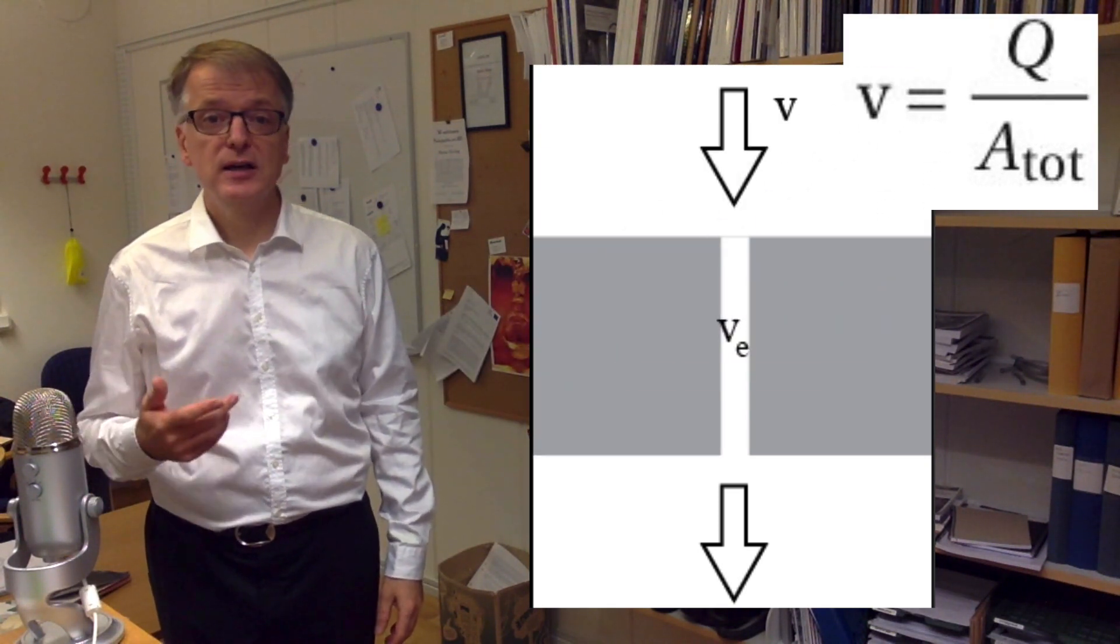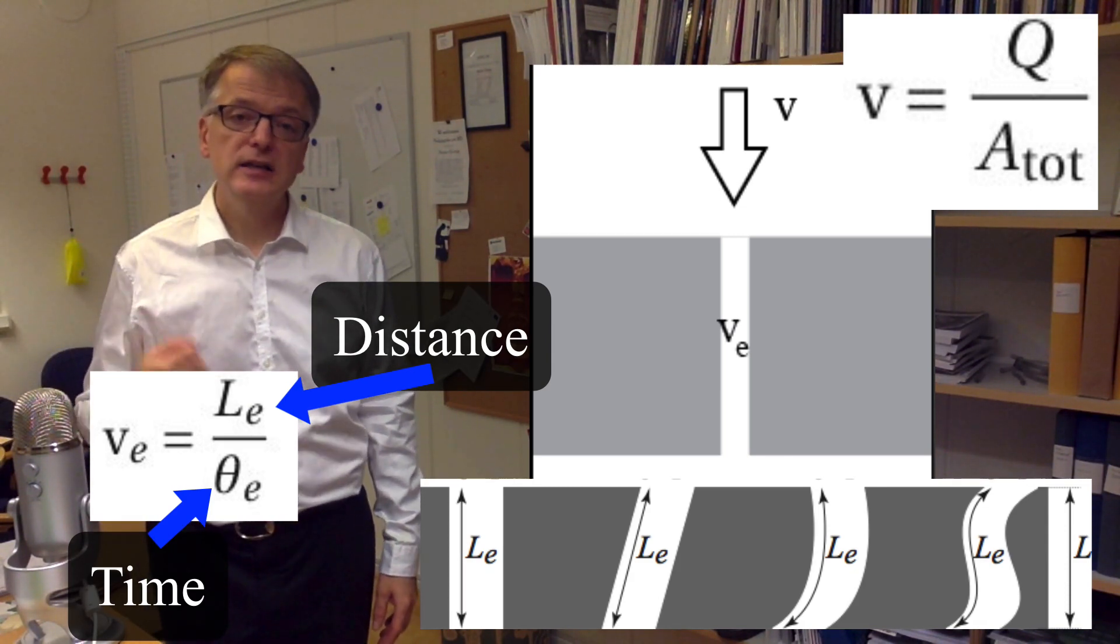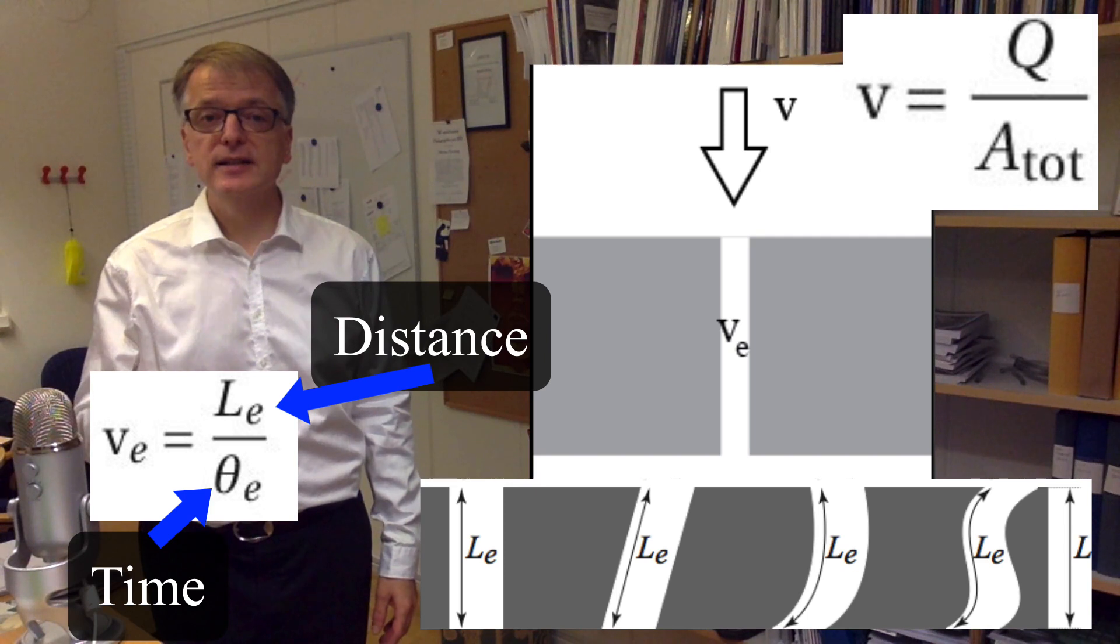The effective velocity V E, which is also known as the interstitial velocity, is the true velocity of the flow inside the channels.